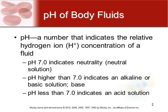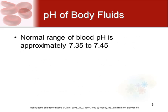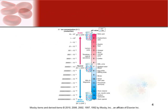Anything less than seven is considered acidic. So if seven is neutral, we go down to zero or up to 14. Normally our blood has a pH of 7.35 to 7.45 — that's what our body wants to maintain in order to maintain homeostasis.